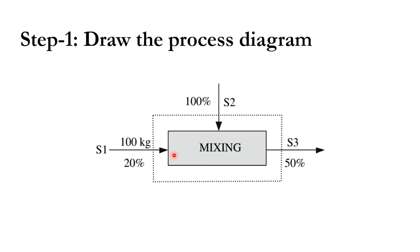In the process flow diagram, S1 is the aqueous solution at 100 kg and 20% concentration. S2 is the dry sugar added, which is 100% sugar. S3 is the outlet, currently unknown, at 50% concentration. S2 is also unknown. One feed (S1) is fully specified, while the outlet flow rate and S2 are unknown.